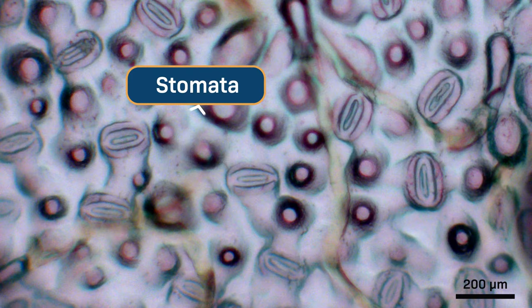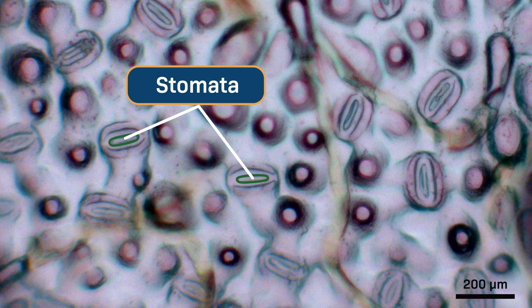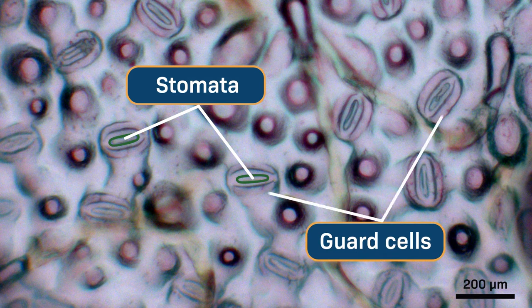Okay, so the stomata are the openings themselves, and then the lips are called guard cells. They control whether the stomata are open or closed.